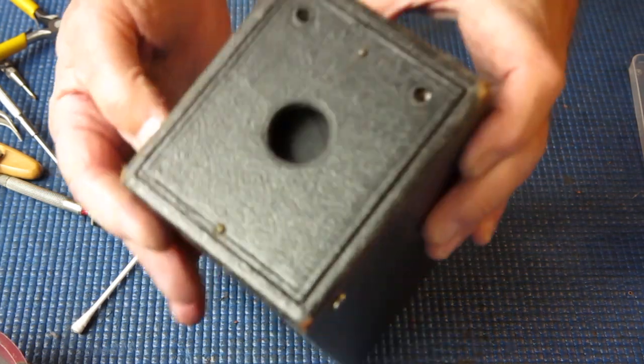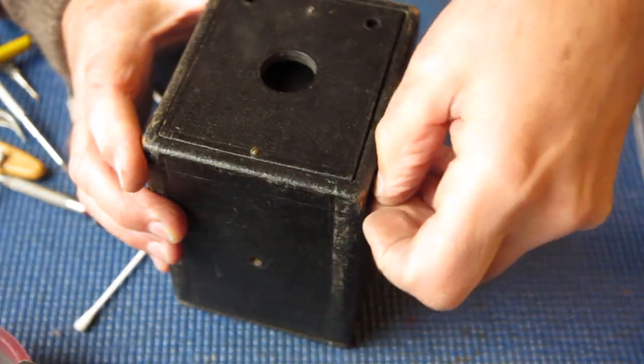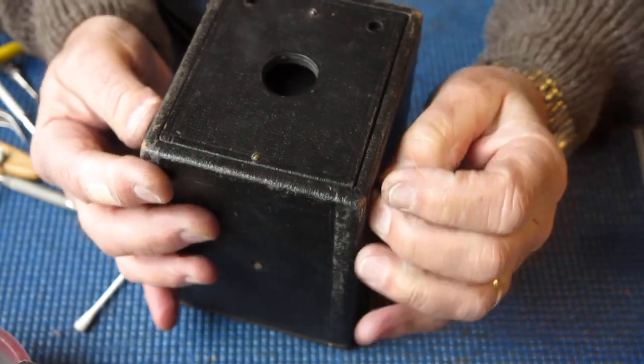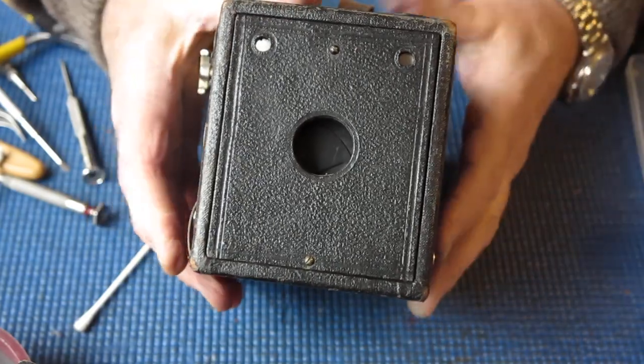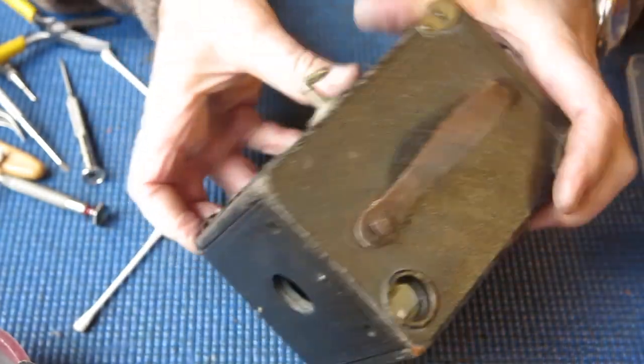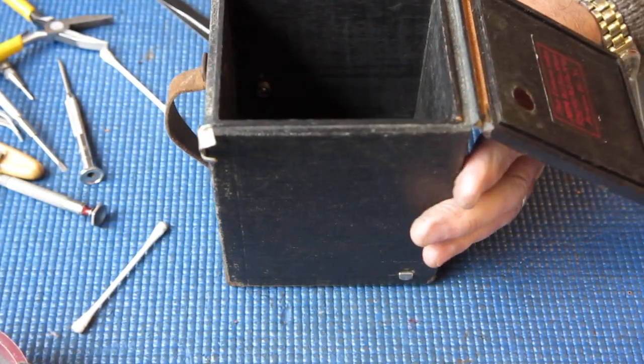So, our shutter is back to going. So, does the B setting work? Let's find out. Yes. And it returns again. So, I think my camera is pretty much ready to go.